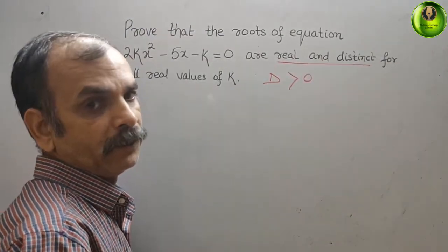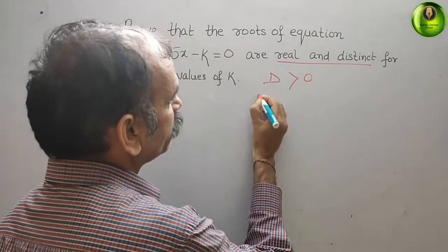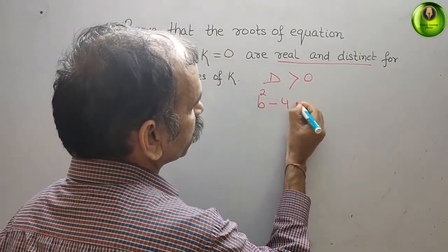So what is your discriminant? Discriminant is b² - 4ac.